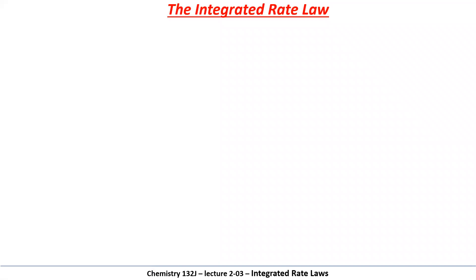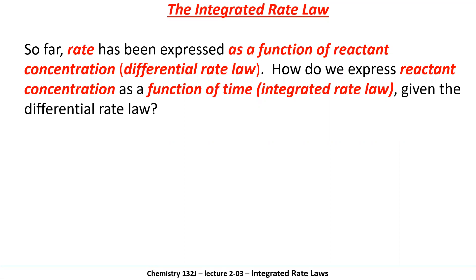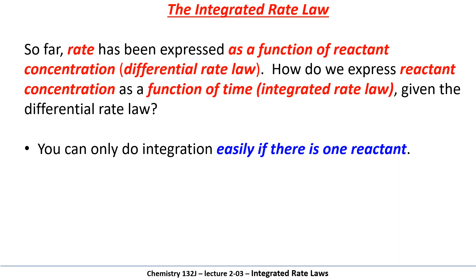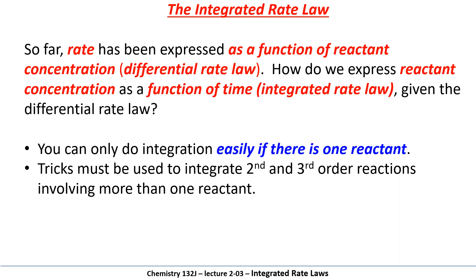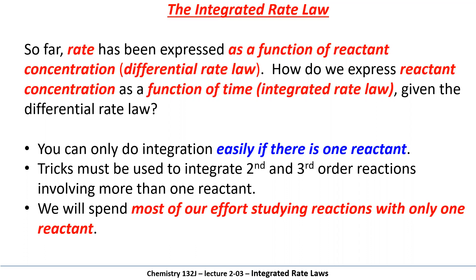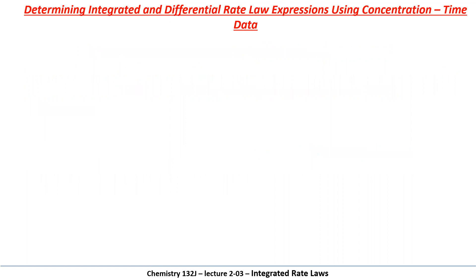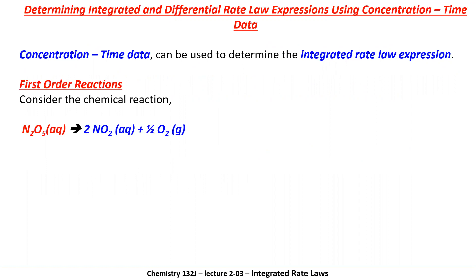Welcome to today's lecture. We are going to be learning about the integrated rate law for chemical reactions. Chemical reactions involve the disappearance of reactants and the appearance of products. We're going to integrate first order reactions for the most part, because it's fairly tricky to do second and third order reactions involving more than one reactant. If we do a second order reaction, we're only going to use one reactant. The equation we're going to look at today is the consumption of N₂O₅ producing NO₂ and O₂.